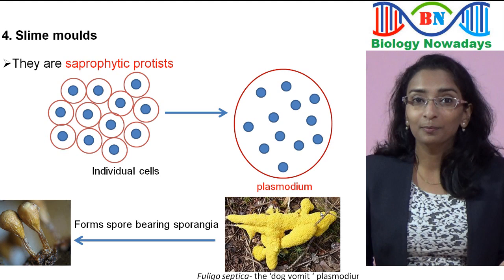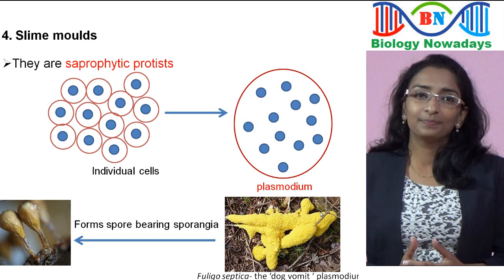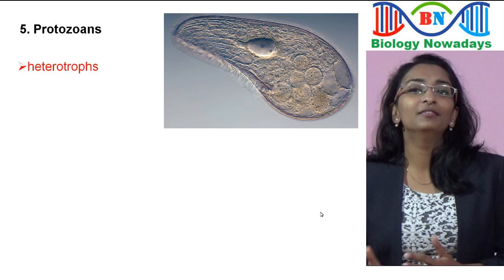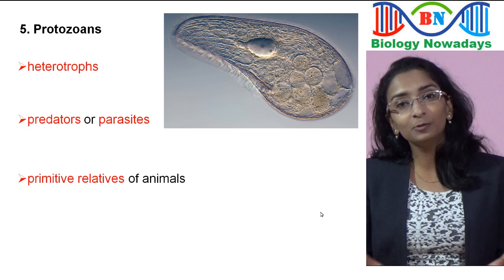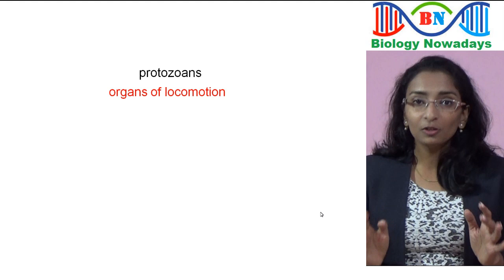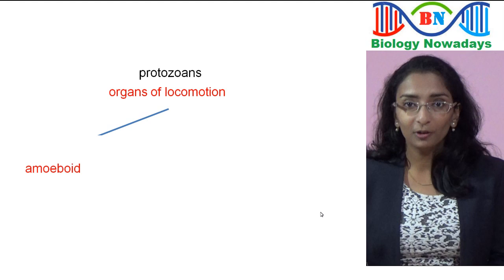Now let's see the last group — protozoans. They are heterotrophs, meaning they depend on other living organisms for food. They live as predators or parasites and are considered to be the primitive relatives of animals. They are found in both freshwater and marine environments. On the basis of organs of locomotion or movement, protozoans are divided into four groups: amoeboid protozoans, flagellated protozoans, ciliated protozoans, and sporozoans.